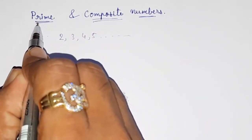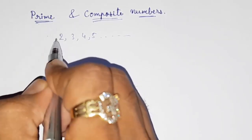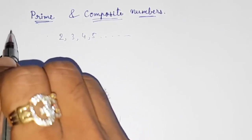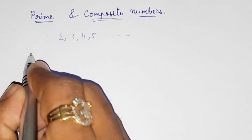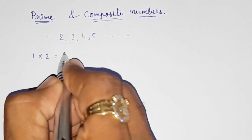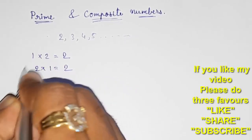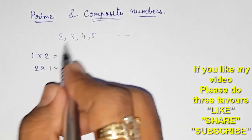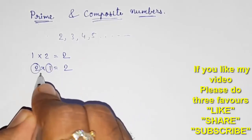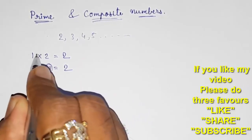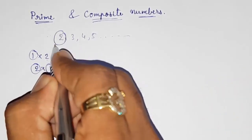Prime numbers are numbers which have exactly two factors: one and the number itself. For example, the factors of two are one and two — one into two is two, or two into one is two. Two appears only in the one-times table and the two-times table, so it has exactly two factors: one and the number itself. So two is a prime number.